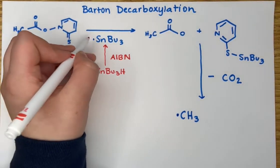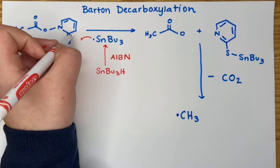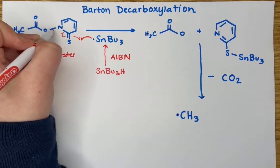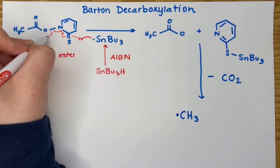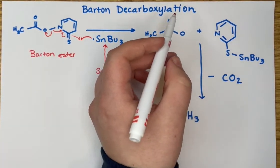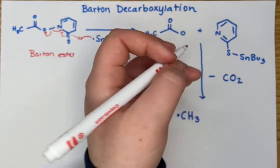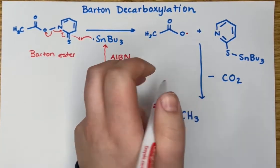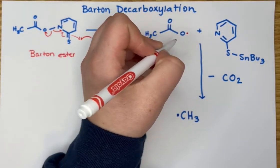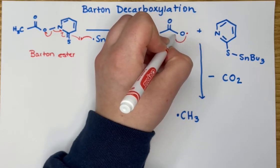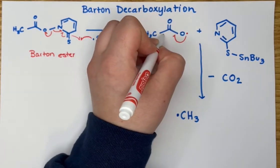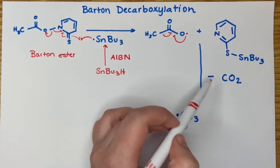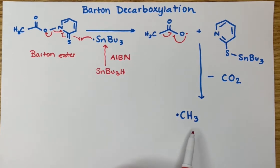Basically what happens is the radical here combines with an electron from our thione, and then this electron swings over here, this electron swings over here, and then we have an electron over here. That brings us to our radical carboxylic acid. What happens here is the radical electron comes in, and that is our decarboxylation — so we lose our CO2 and then we get a radical alkane.